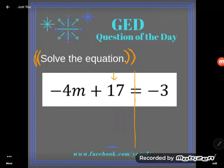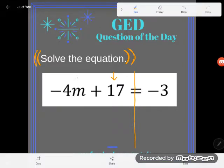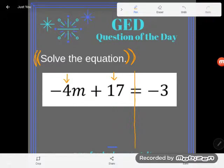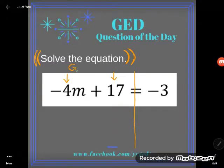You can see there's two numbers I need to get rid of, a 17 and a negative 4. Now I'll just remind you guys that when we're solving we actually work the order of operations backwards. So you should move anything that's adding or subtracting away first.